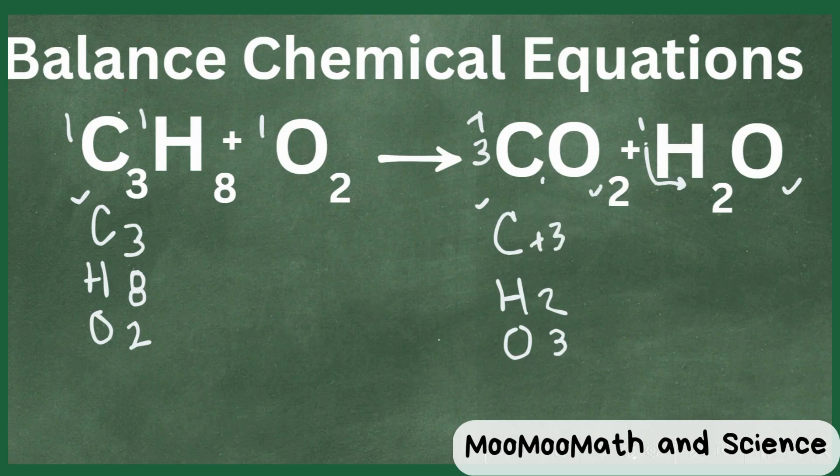It's looking good so far. But we also need to multiply this 3 times this 2. So oxygen now becomes a 6. So we have carbons balanced for at least now.